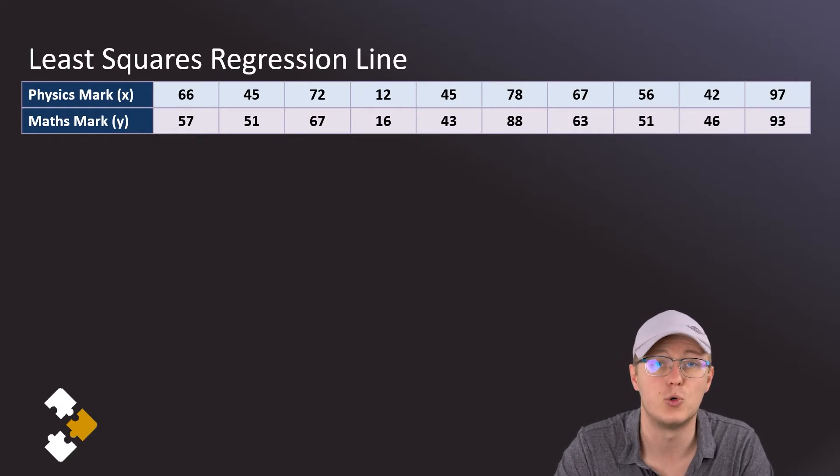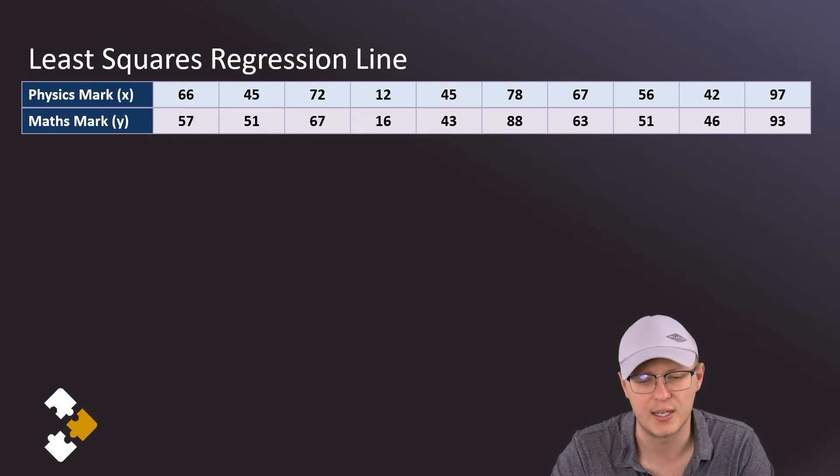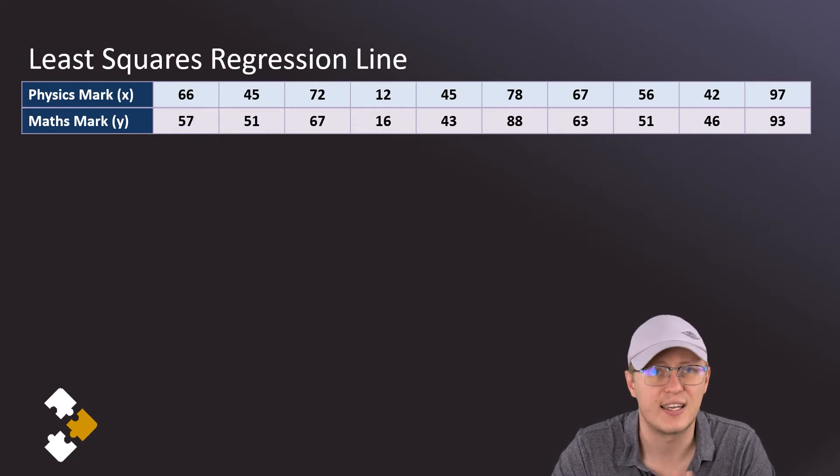Now the first option is for when you have univariate data, the type that you're used to seeing, but we're dealing with bivariate data where we expect to have a linear relationship. So we're going to select option 2, A+Bx.